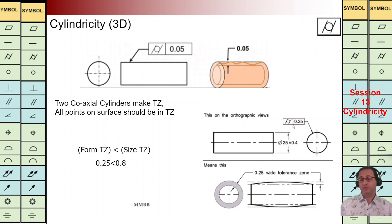The cylindricity for this component is 0.25, and this cylinder has a diameter of 25 plus minus 0.4. Always, the form TZ should be smaller than the size TZ. As we can see here, 0.25 is smaller than the size tolerance zone 0.8.